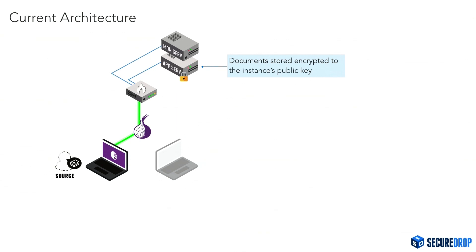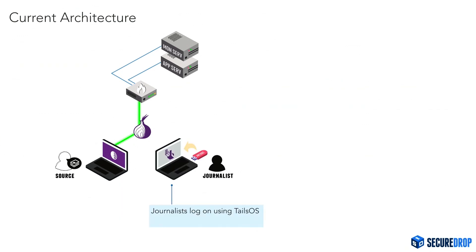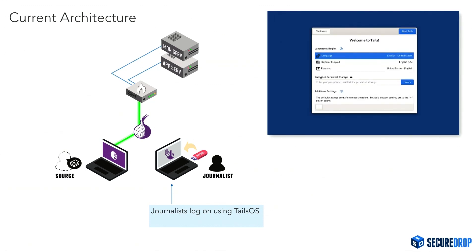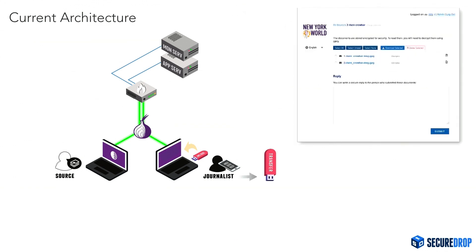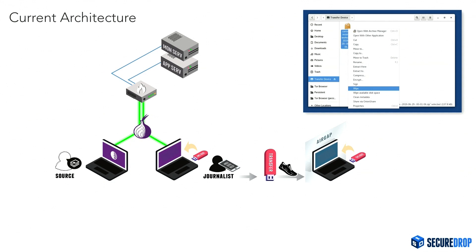Documents and messages submitted by sources are stored encrypted to a public key associated with the instance. To make use of those documents, a journalist logs in using an online workstation that's only ever used for SecureDrop, running Tails — a live operating system based on Debian. Tails has an amnesiac feature where minimal state is persisted across reboots, which is nice for the malware situation. They download the encrypted documents, copy them onto a data transfer device — sometimes a USB drive, sometimes a CD — and traverse an air gap onto an air-gapped workstation also running Tails. That is the only place where the private key exists to decrypt the documents, so they decrypt, read, and decide what to do next.